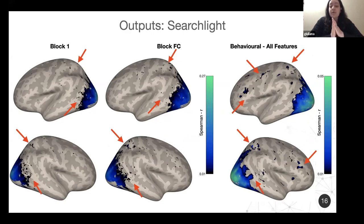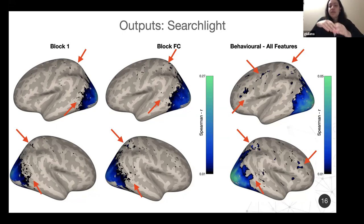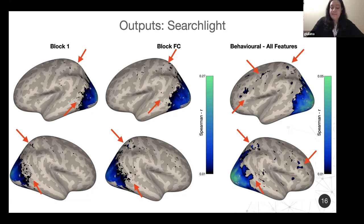Our question now is how we go from this fully connected result to this behavioral result, using the combination of the convolutional neural network and the recurrent layer.